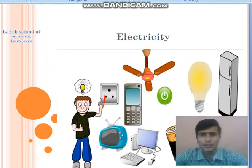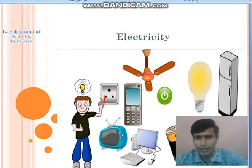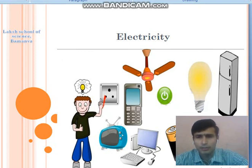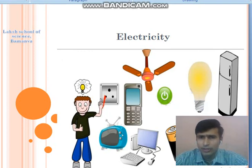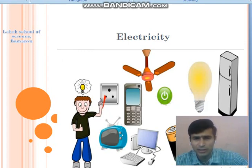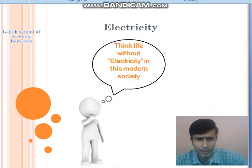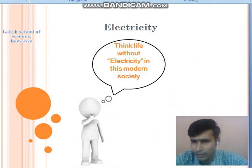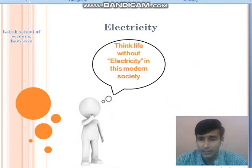Look at the picture on the screen. We use electricity at our home for appliances like a fan, mobile, computer, radio — we use electricity to operate all these electrical appliances. Electrical energy is very important to human beings. Think about life without electricity in our modern society. Human life cannot survive without electricity in a modern technological society.